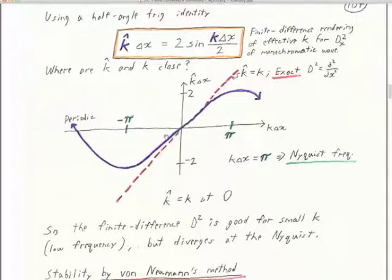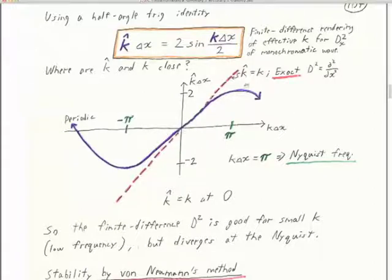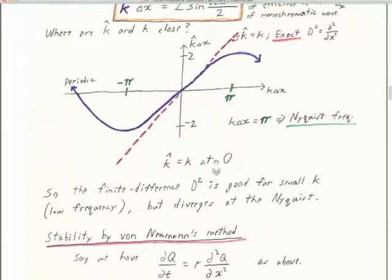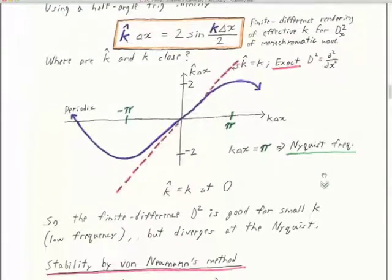The finite difference D² is great for small K (low spatial frequency), but it diverges at the Nyquist at higher spatial frequencies and becomes less accurate. This is why all our finite difference calculations are limited in their spatial frequency — we don't want K-hat to get too far from the true K. Once that starts happening, our estimate of the derivative will be wrong. Most wave propagation codes want accuracy down to about π/10 (one-tenth of Nyquist), but for extrapolation we might do okay at half the horizontal Nyquist.